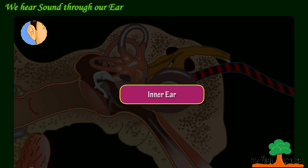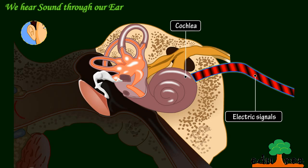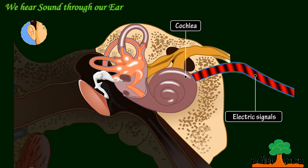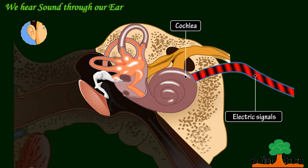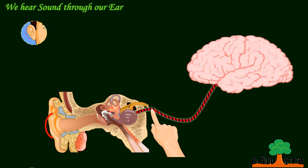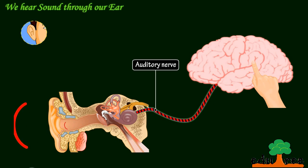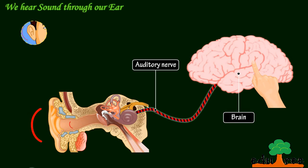The inner ear's pressure variations of the sound wave are turned into electrical signals by the cochlea. The cochlea contains fluid and tiny hair. Sound waves travel through the fluid and make the tiny hair move. These moving hairs cause an electrical signal. Here, you can see the electrical signals moving through the auditory nerve. The electrical signals are passed through the auditory nerve to the brain, and finally your brain interprets them as sound.